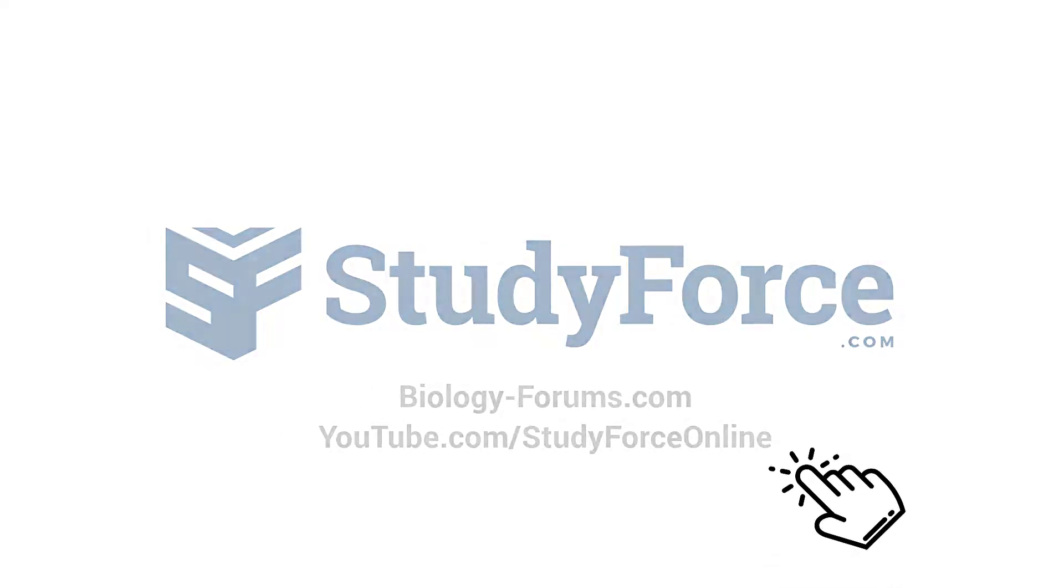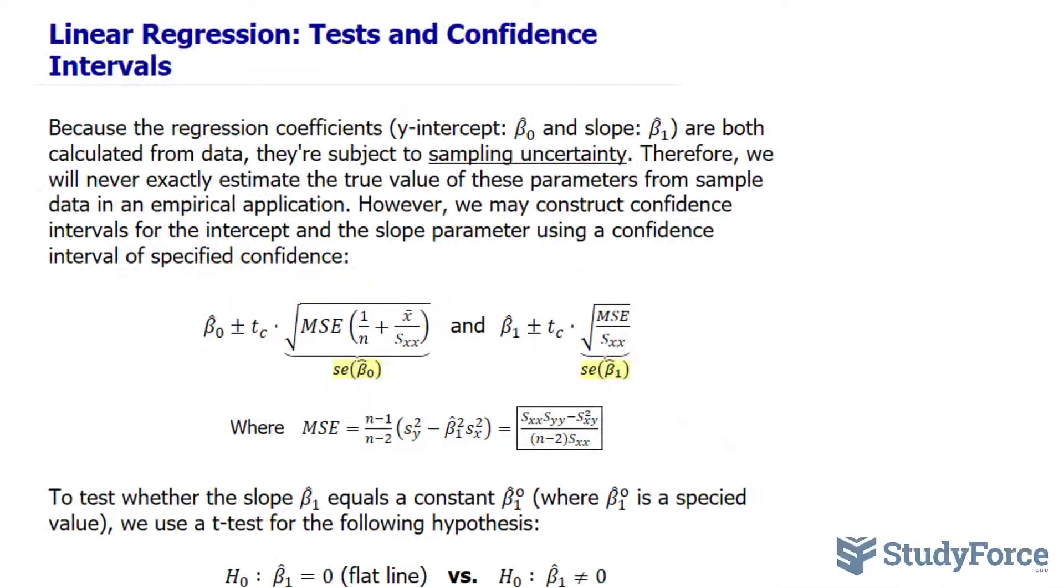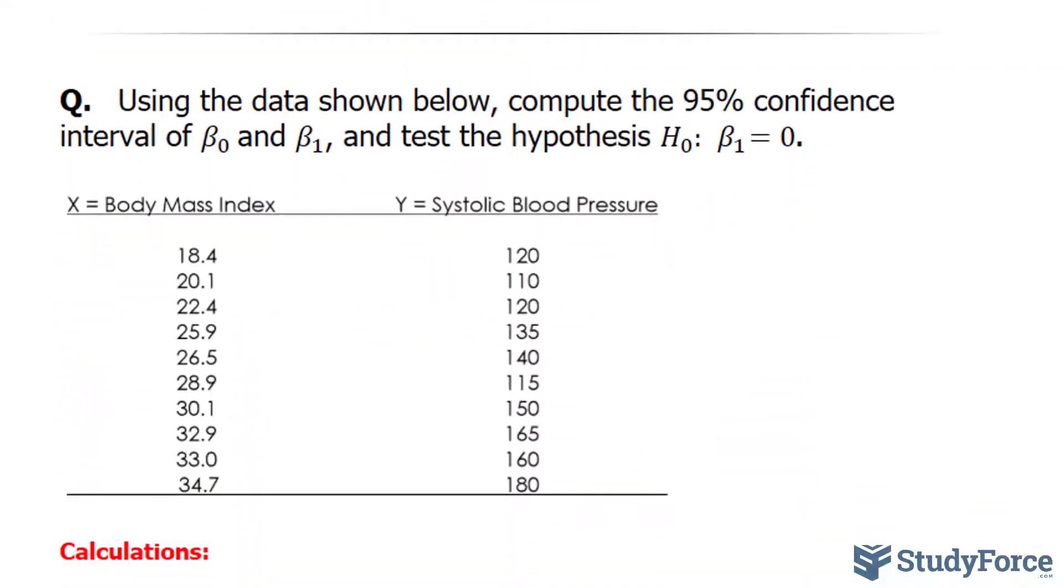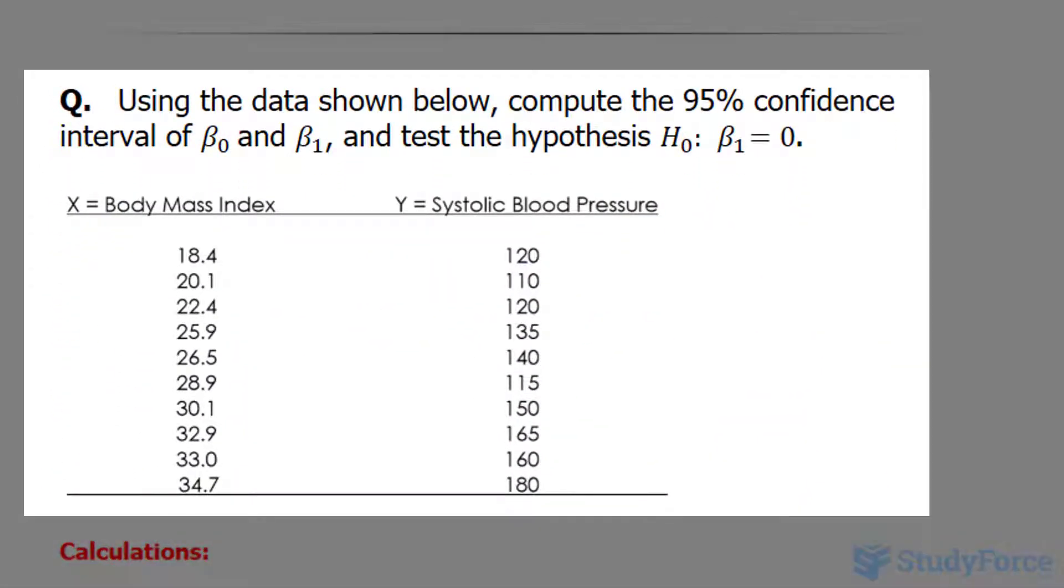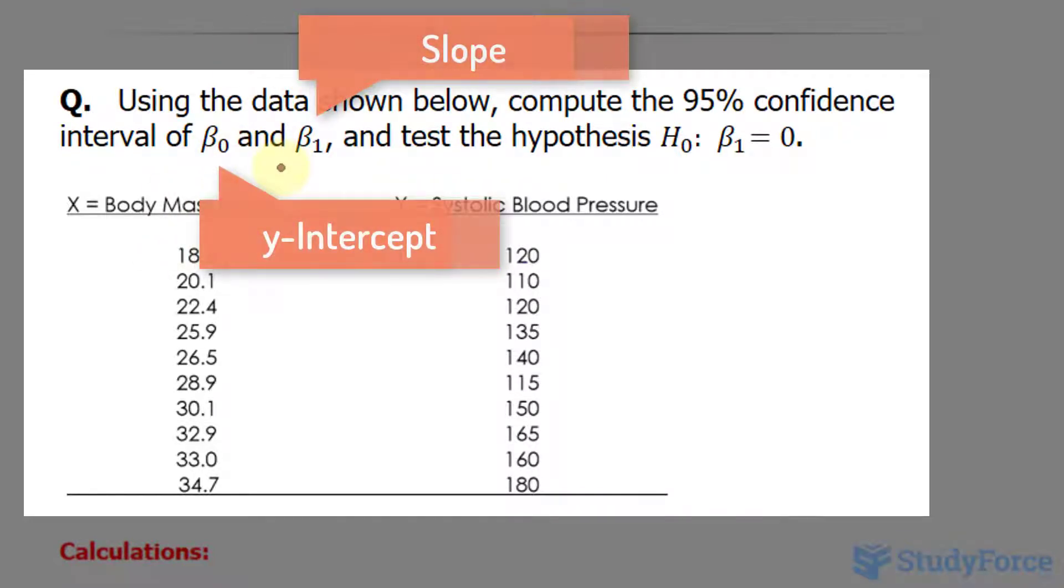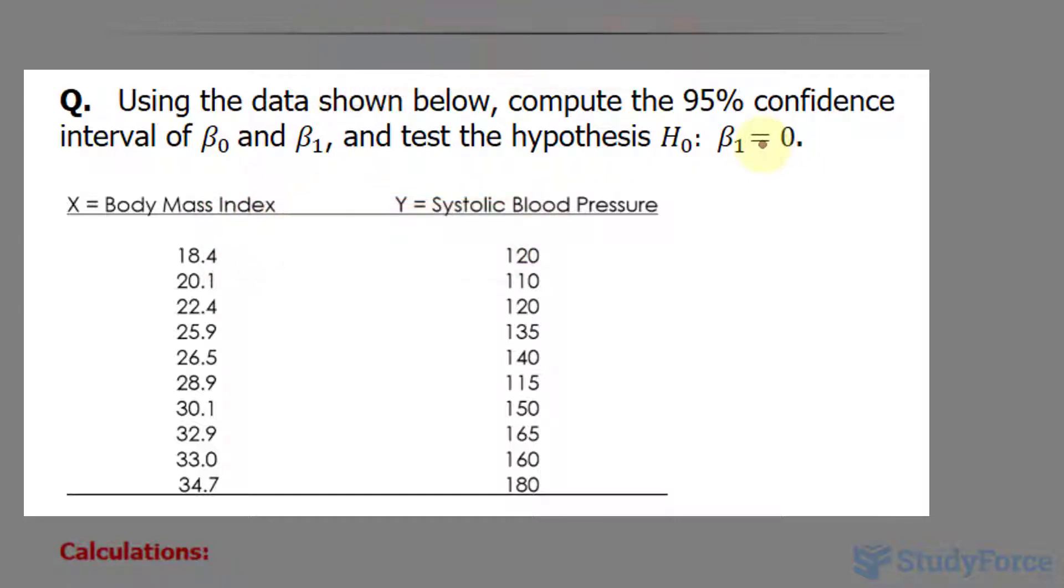In this lesson, I'll show you how to calculate the confidence interval of the y-intercept and slope for the regression model that you find, and I'll show you how to test the significance of these values. The question we're answering reads: using the data shown below, compute the 95% confidence interval of beta sub zero and beta sub one and test the hypothesis that beta sub one is equal to zero.